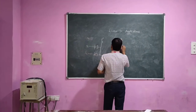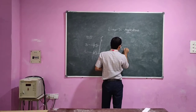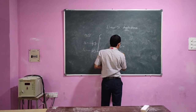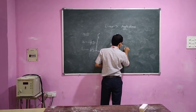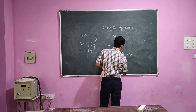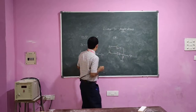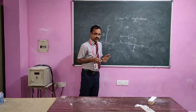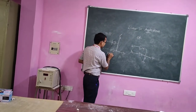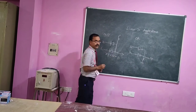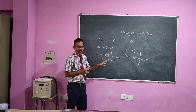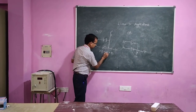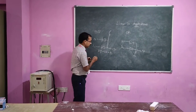Let us see the internal structure of the AND gate using diodes and resistors. Suppose if I want to realize some expression: X·Y + X'·Y' = F. With basic gates, we can say two AND gates are required and one OR gate is required.